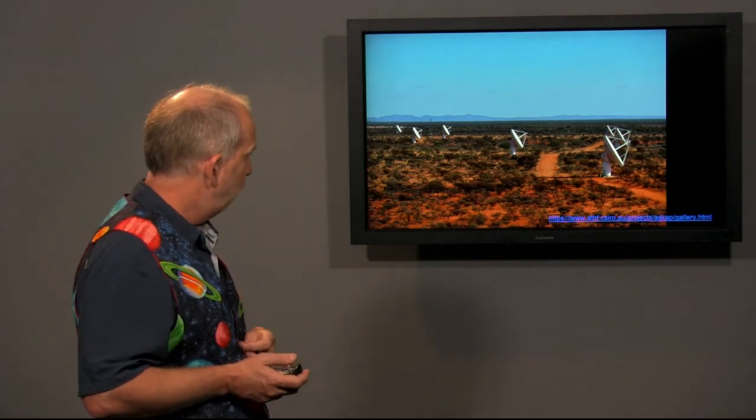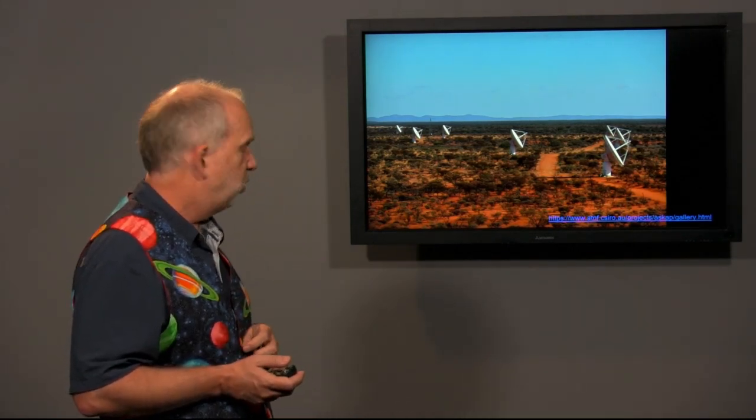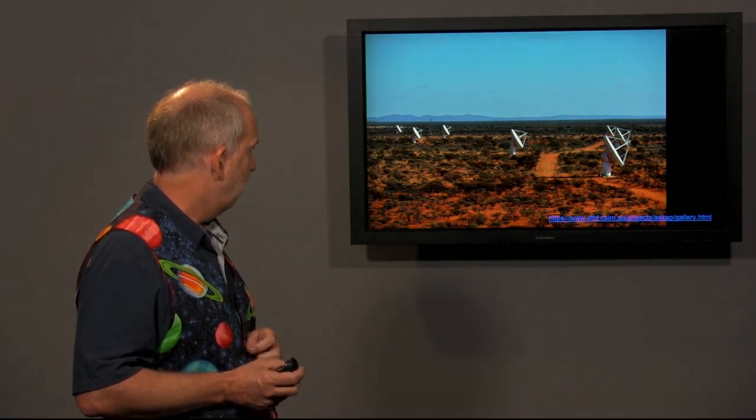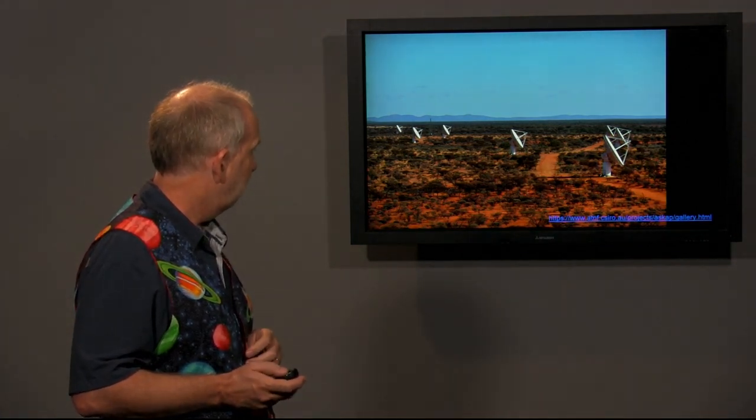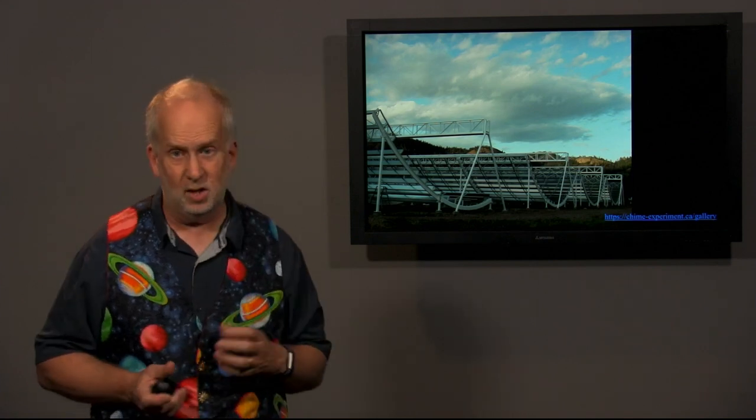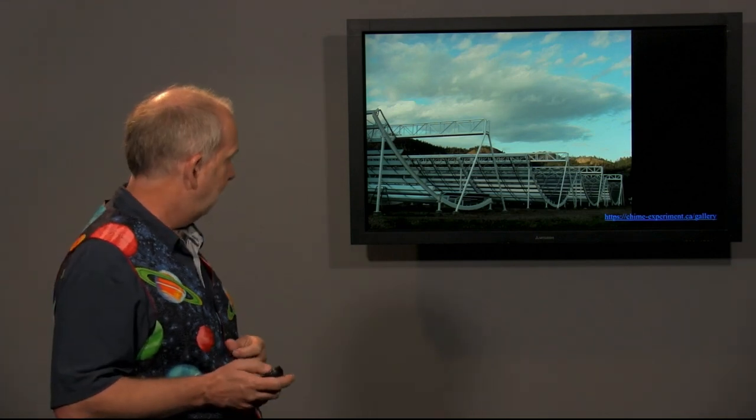More recently a number of new telescopes have come online which can measure these far more efficiently and pinpoint on the sky more accurately where they've come from. This is the ASKAP in the outback of Western Australia, and this is CHIME in British Columbia, Canada. And these two are the current leaders at spotting these things and getting accurate positions.